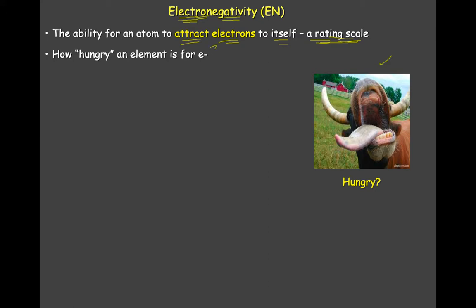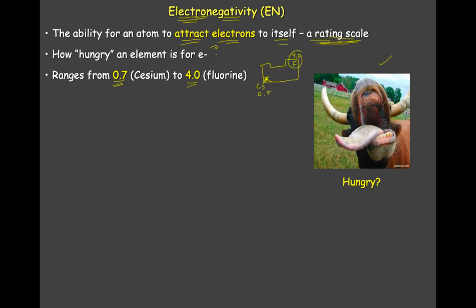So how hungry is something for electrons? If an element is really hungry for electrons, it's got a high EN. You can think about it as how hungry you are for your favorite food — on a scale of 1 to 10, if you're a pizza lover you'd be a 10, if you didn't like pizza you'd be a 1. This ranges from two values: 0.7 for cesium and 4.0 for fluorine. If you're looking at the periodic table, cesium is going to be down here at 0.7, and fluorine is going to be up here — so we're starting to see some extremes in the table, and cesium and fluorine are on opposite ends.